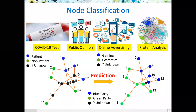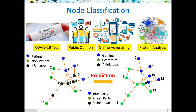In the research of machine learning with graphs, there are two typical tasks. One is node classification. Given a graph in which some nodes are labeled, such as green and blue ones, the goal of node classification is to correctly predict the label of the remaining unlabeled nodes. Node classification has different kinds of applications, such as to detect COVID-19 patients or to classify user opinions on online platforms.